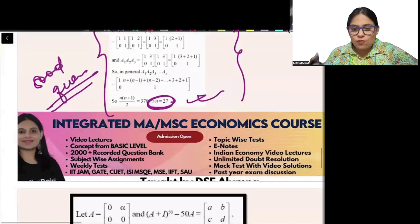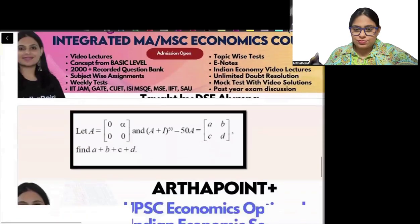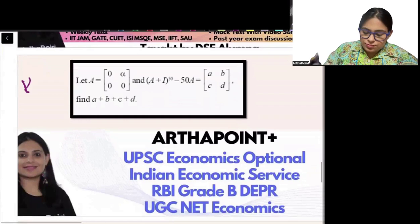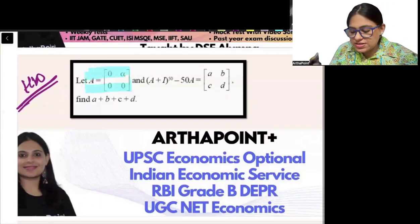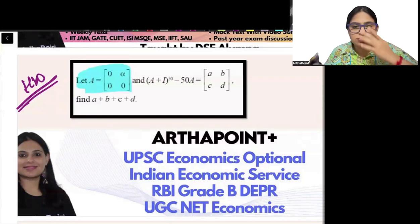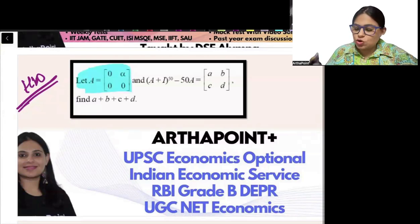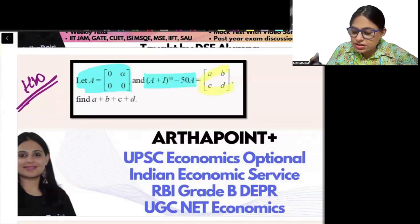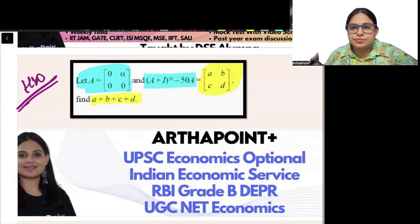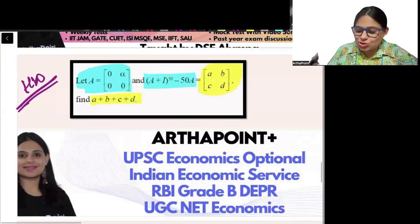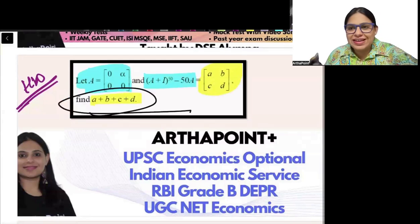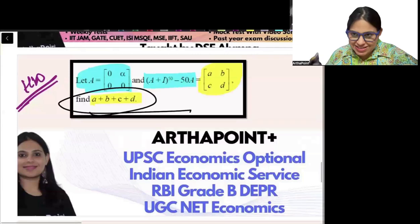Here is the homework question for you. You are given A = [[0, α], [0, 0]]. You are also given that (A + I)^50 − 50A equals some matrix with entries a, b, c, d. Find the value of a + b + c + d. Try to post your answers in the chat window.